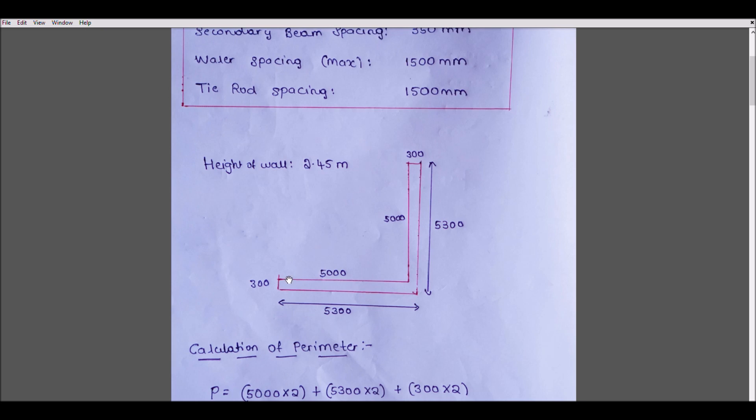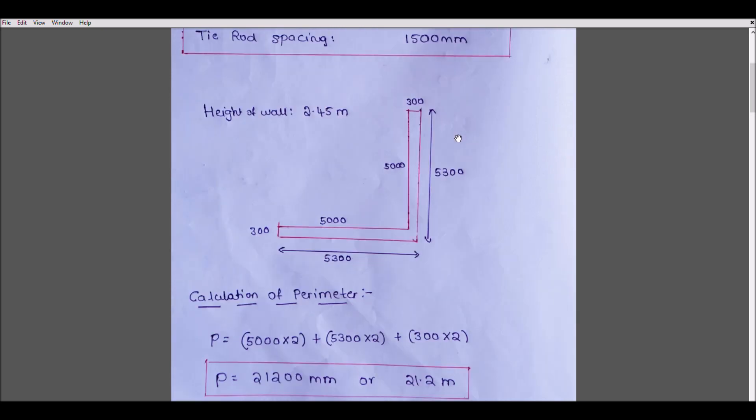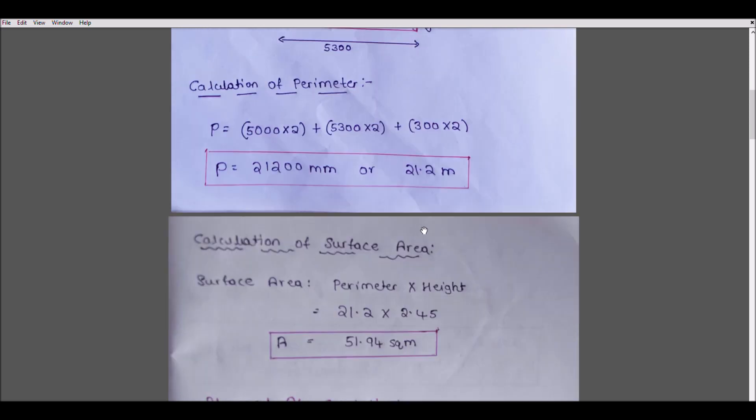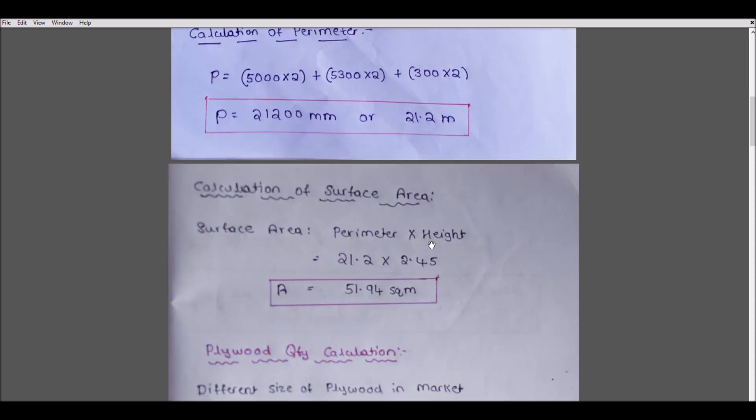First, we have to calculate the perimeter. This is simple: 5000×2 + 5300×2 + 300×2, and you will arrive at a perimeter of 21.2 meters. This perimeter plays a major role in calculating the surface area. The surface area is perimeter times height, so 21.2 × 2.45 = 51.94 square meters.